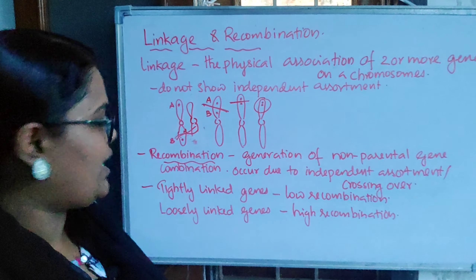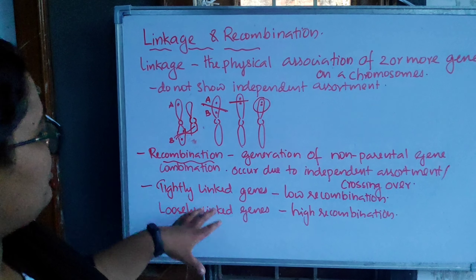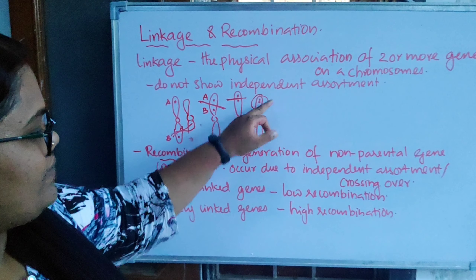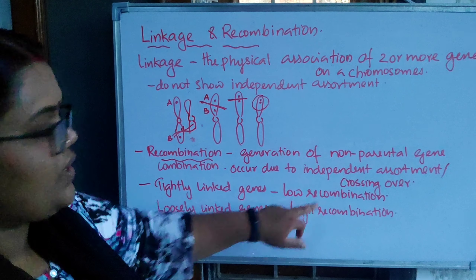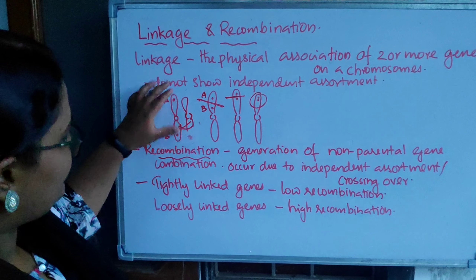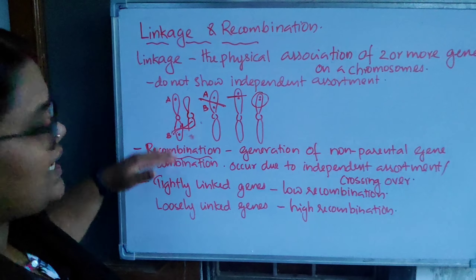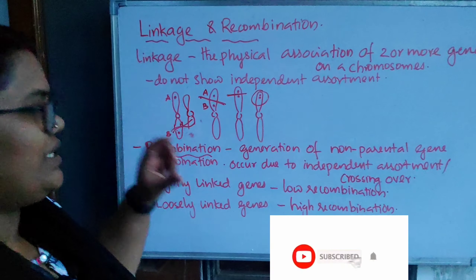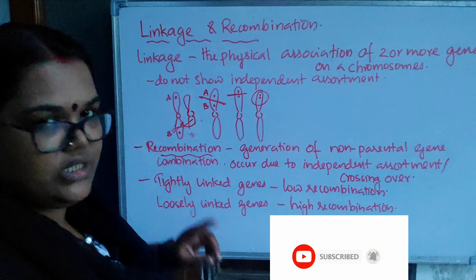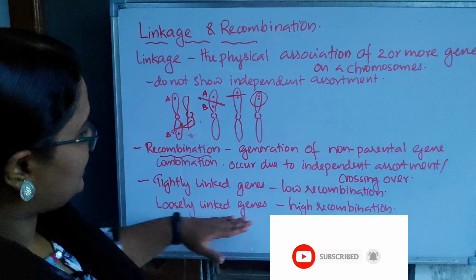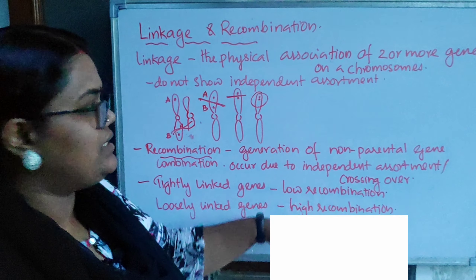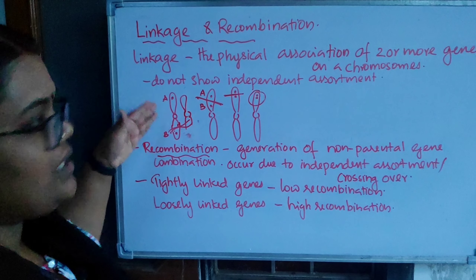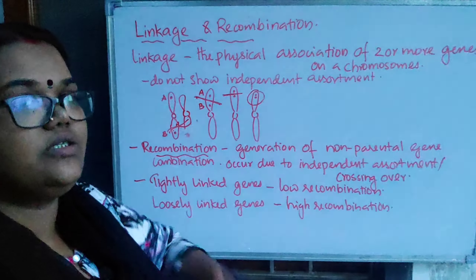The tightly linked genes show very low recombination. Whether they are loosely linked — meaning there is more distance between the two genes — we can say loosely linked genes show a high chance of recombination. If the genes are really far apart, then there is a very high chance of recombination. So as distance increases, recombination frequency increases.